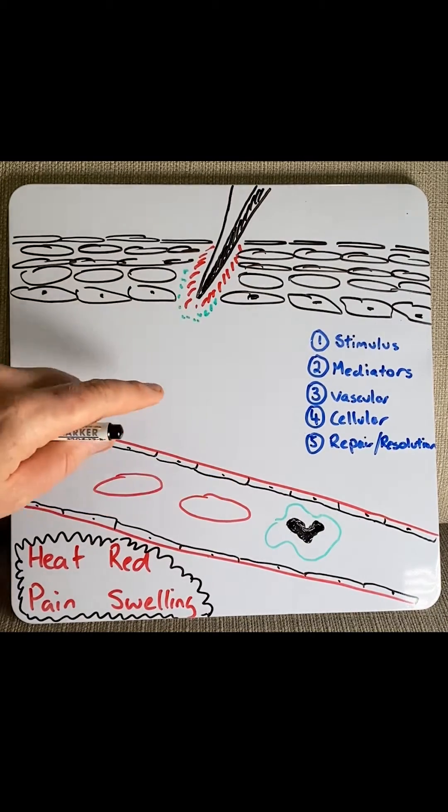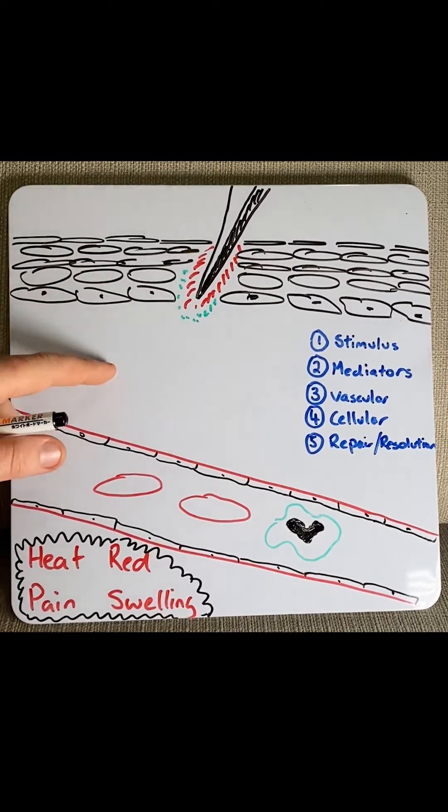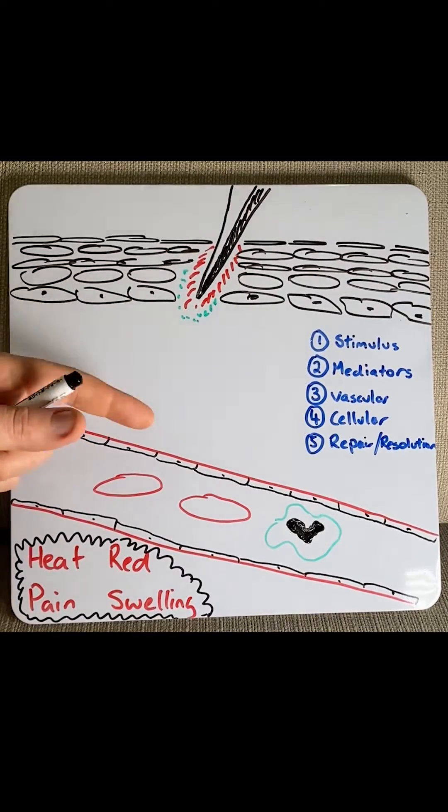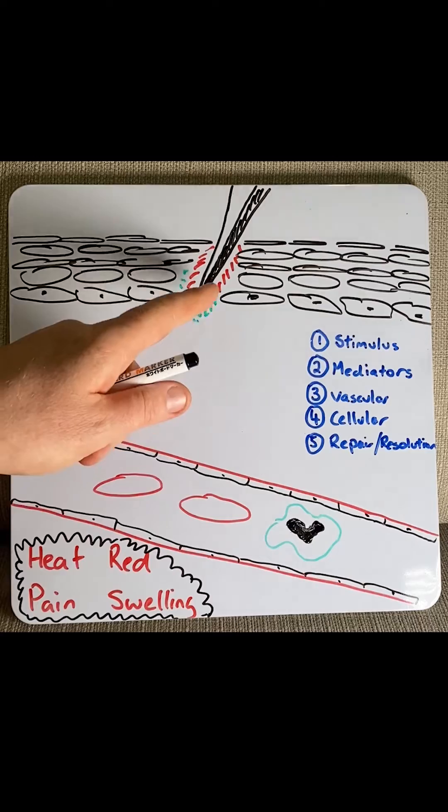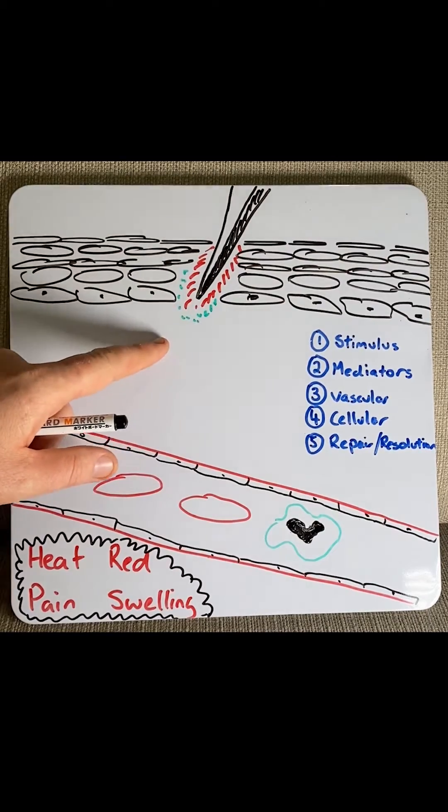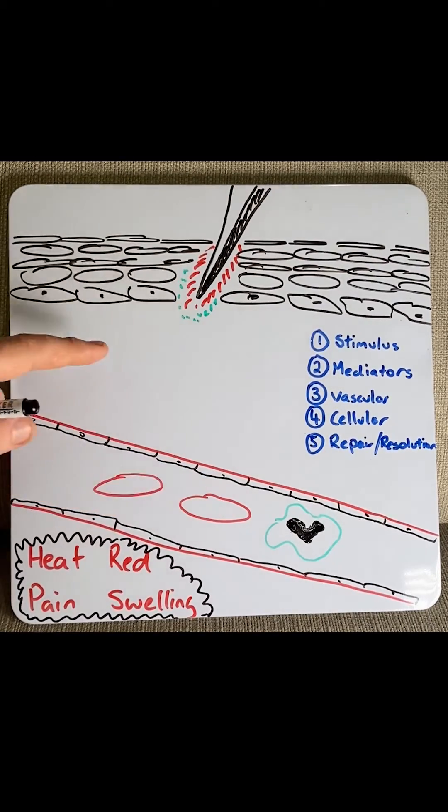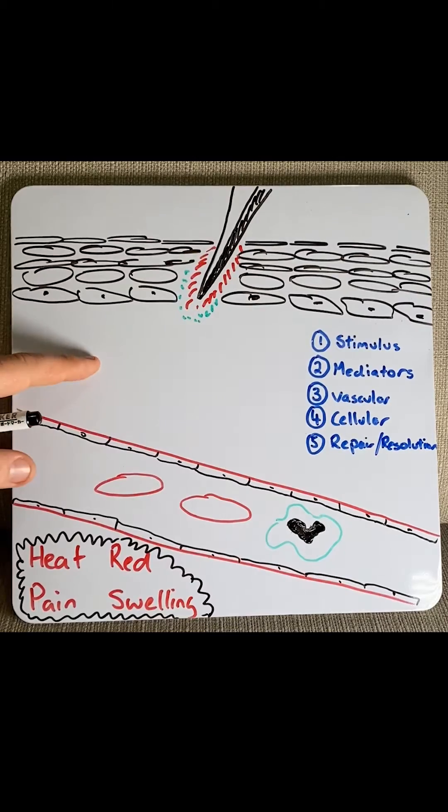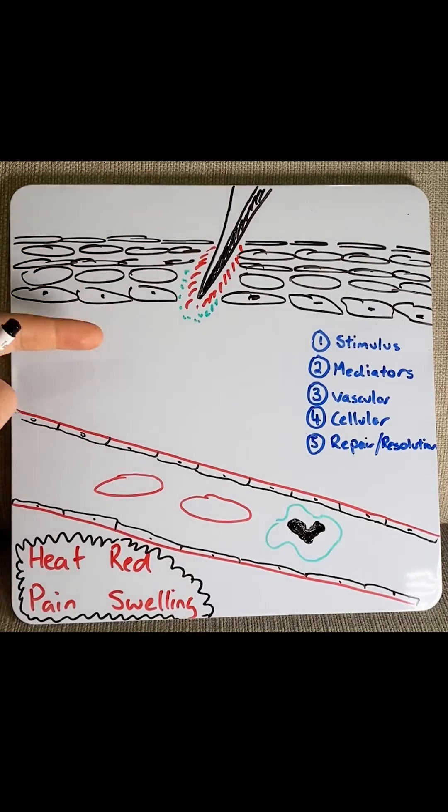Step two would be certain neighboring or resident immune cells such as macrophages, mast cells, or dendritic cells picking up these pathogens or damaged cells and releasing mediators. For example, mast cells release histamines, prostaglandins, or certain cytokines.